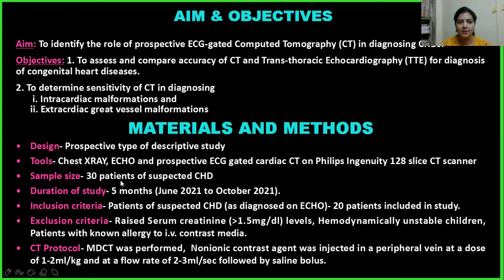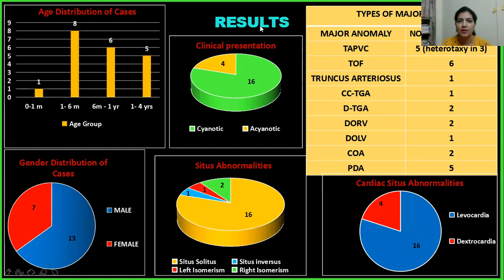The sample size was 30 patients of suspected CHD over a 5-month duration. Inclusion criteria: patients of suspected CHD as diagnosed on echo — 20 patients were included in the study. Exclusion criteria were raised serum creatinine, hemodynamically unstable children, and patients with known allergy to IV contrast media. CT protocol: non-ionic contrast agent was injected in a peripheral vein at a dose of 1–2 ml/kg at a flow rate of 2–3 ml/second, followed by saline bolus.